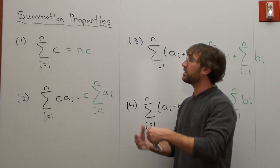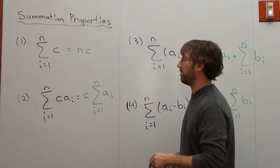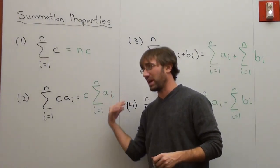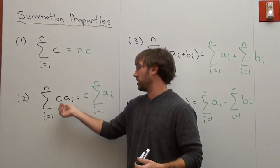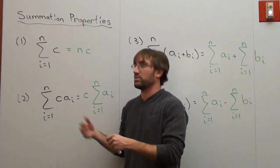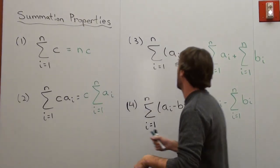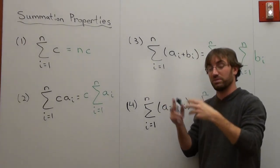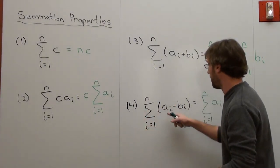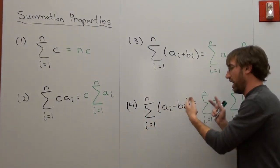Hello again. In this particular lesson, what we're doing is summation properties, and there's four main ones to use here. What happens when you just have a constant? What happens when you have a number times a variable? What happens when you have a variable plus a different variable? I guess there could be a constant in there too. And what happens when you have something subtracted by something?